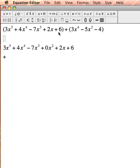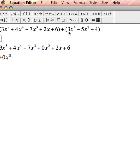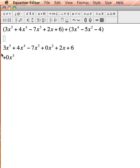So let's see. So I have 0x to the fifth power. And the reason I have 0x to the fifth power is because in my second polynomial you notice I don't have an x to the fifth power. So that will be 0. It makes it a little bit easier to add.